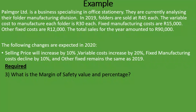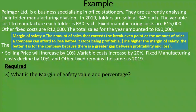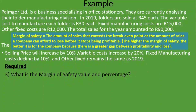The third requirement asks for the margin of safety value and percentage. The margin of safety is the amount of sales that exceed the break-even point, or the amount of sales a company can afford to lose before it stops being profitable — in essence, the difference between the break-even value and the sales value. The higher the margin of safety, the better it is for the company because there is a greater gap between profitability and the break-even point.